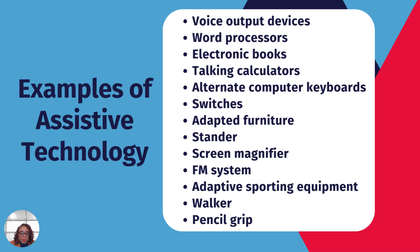Here are examples of assistive technology: pencil grip, screen magnifier, standard adaptive furniture switches, talking calculators, electronic books, and word processors. All of these are examples of assistive technology, and whether or not they're included in the services page will be based on that particular student's needs.